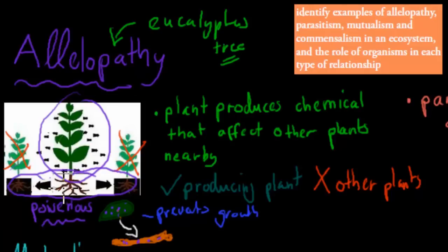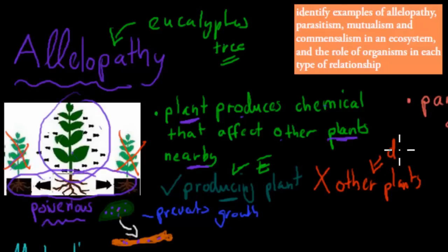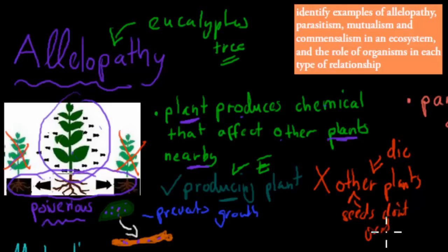Why would a eucalyptus tree want to do that? Well, the more it kills off, the more space it has — a whole area to itself because of that chemical it produces for allelopathy. That means it has more space, more water, and more nutrients, so it itself can grow more. So allelopathy: plants produce chemicals that affect other plants nearby. The producing plant benefits, while nearby plants either die or their seeds don't grow — so they're affected negatively.